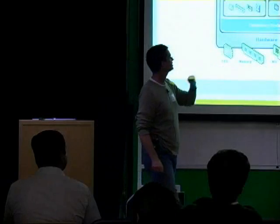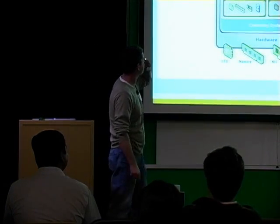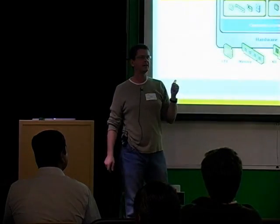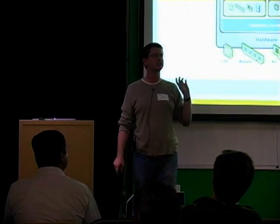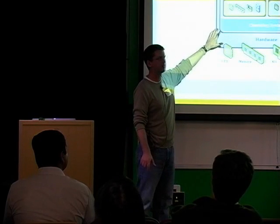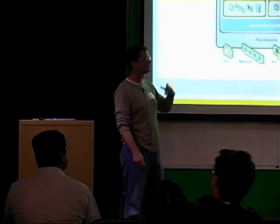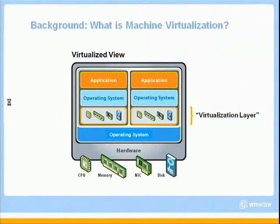Another thing I'd like to point out is that there's still an operating system sitting on top of the hardware. Virtualization environments do things in different ways. This is the picture for VMware Workstation, which is what I'm building on here. But of course, there are other virtualization environments like ESX Server from VMware where there is no host operating system — the virtualization layer sits directly on top of the hardware.